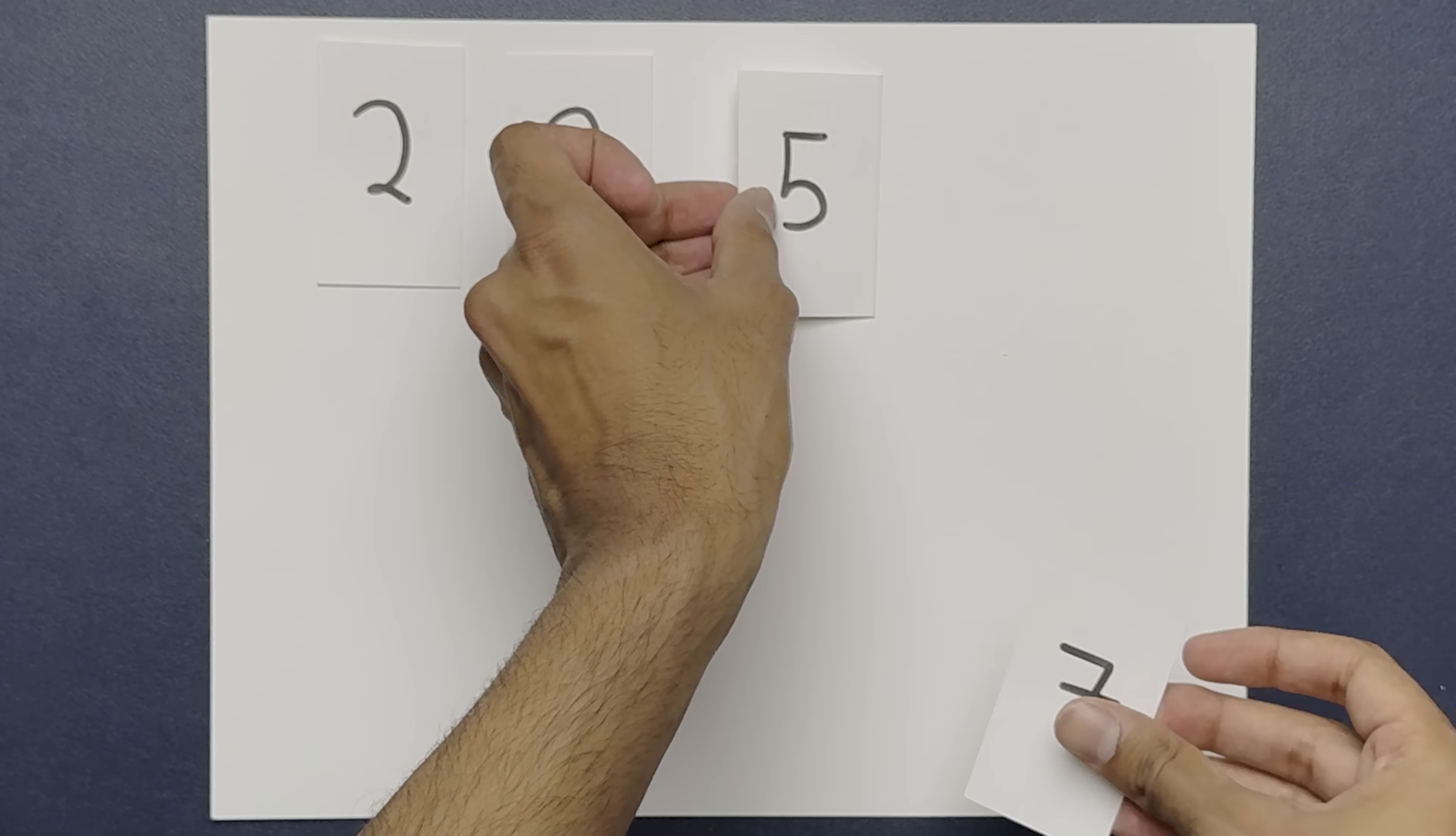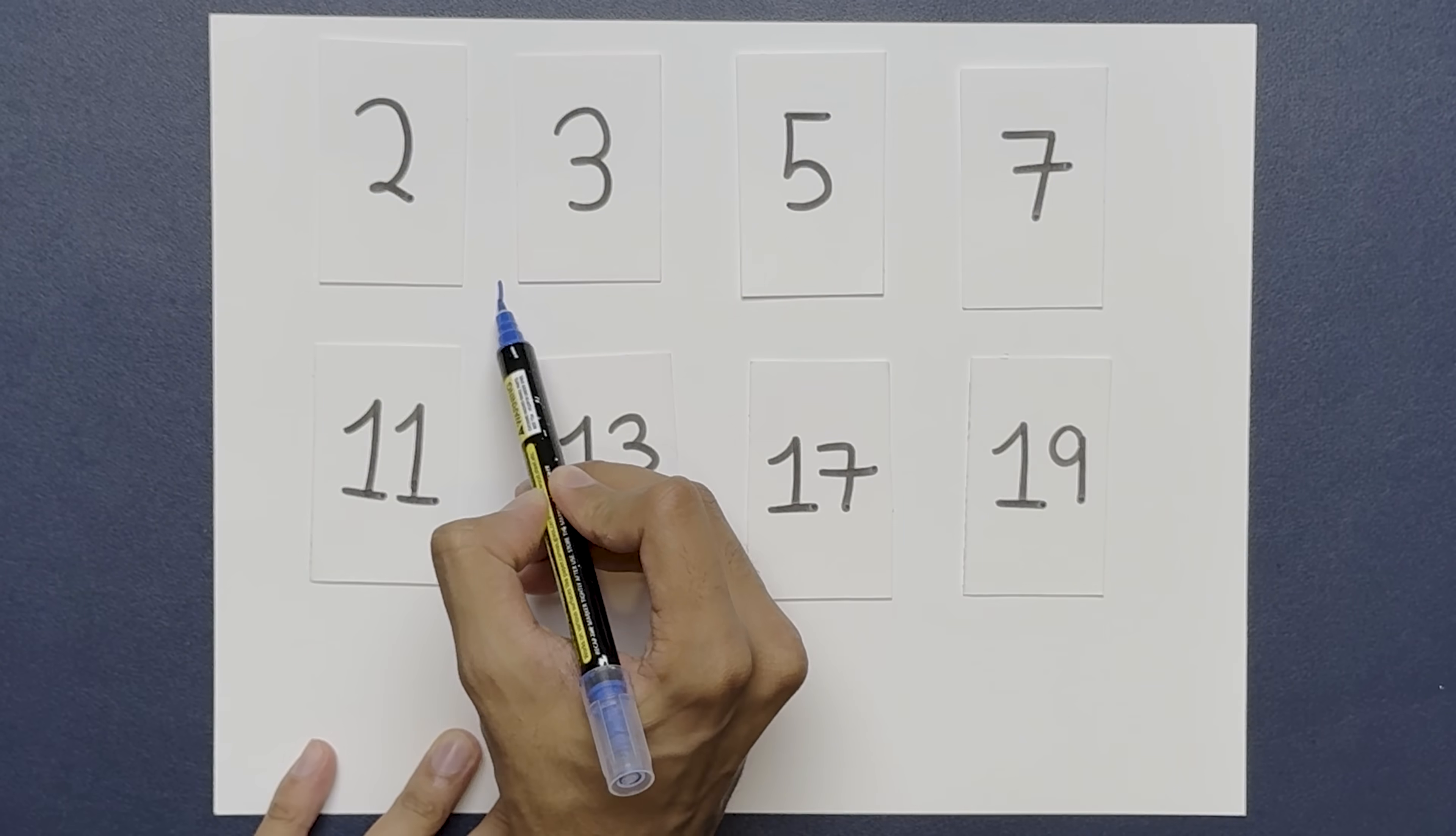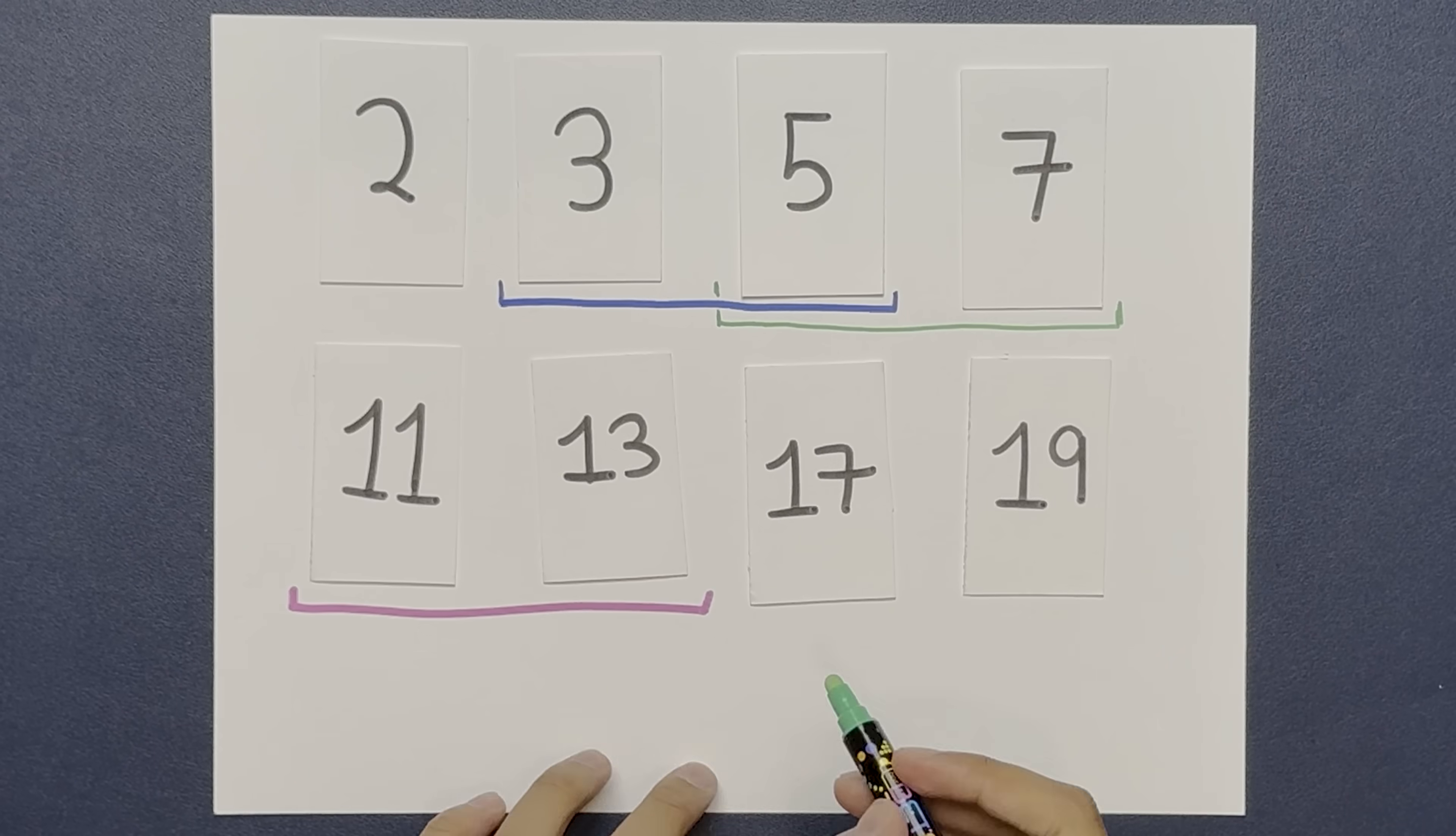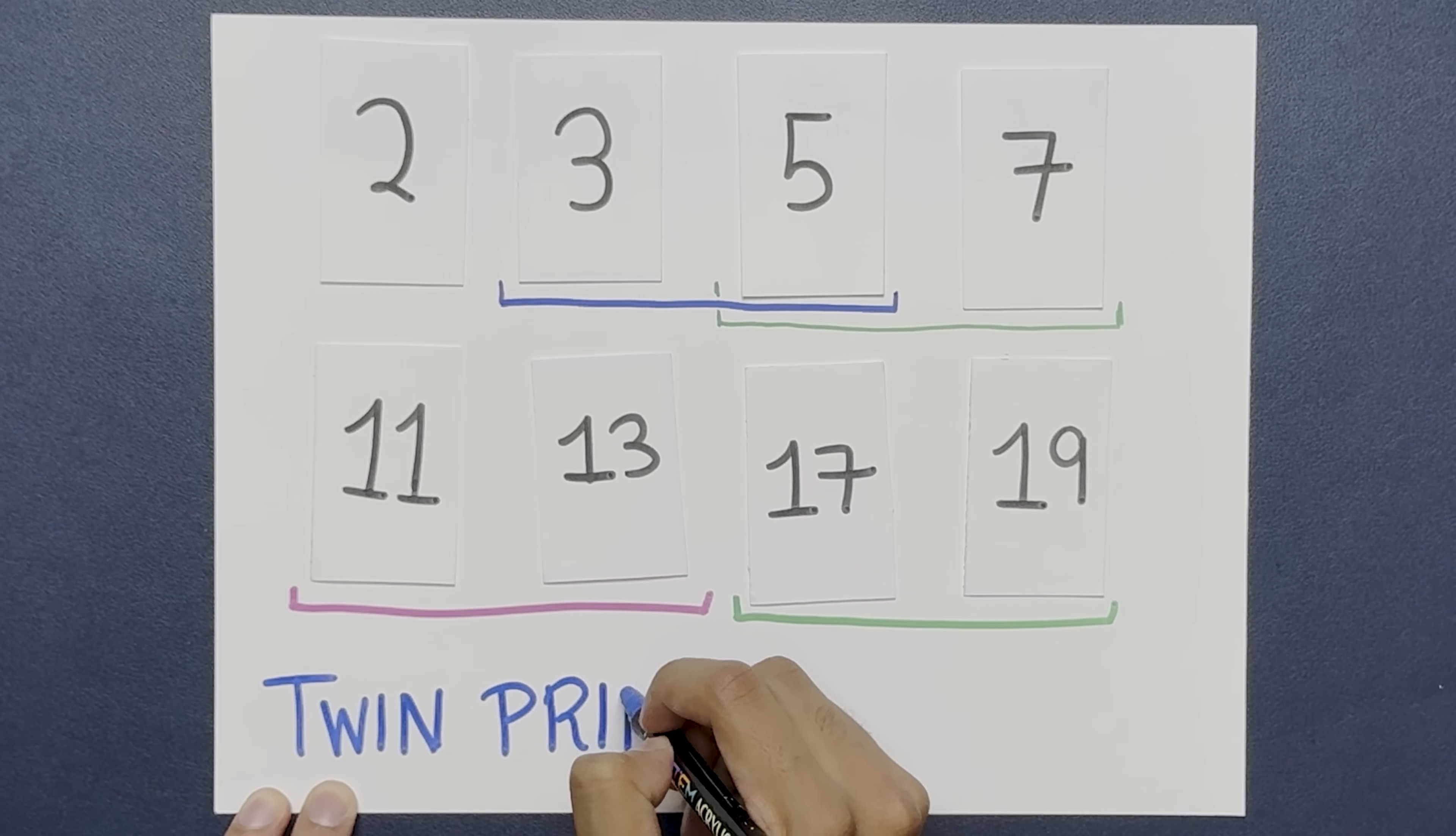So what is a twin prime? Let's list out the first few prime numbers. Every so often, you'll spot two prime numbers that are exactly two apart. 3 and 5, 5 and 7, 11 and 13, and so on. These pairs are called twin primes.